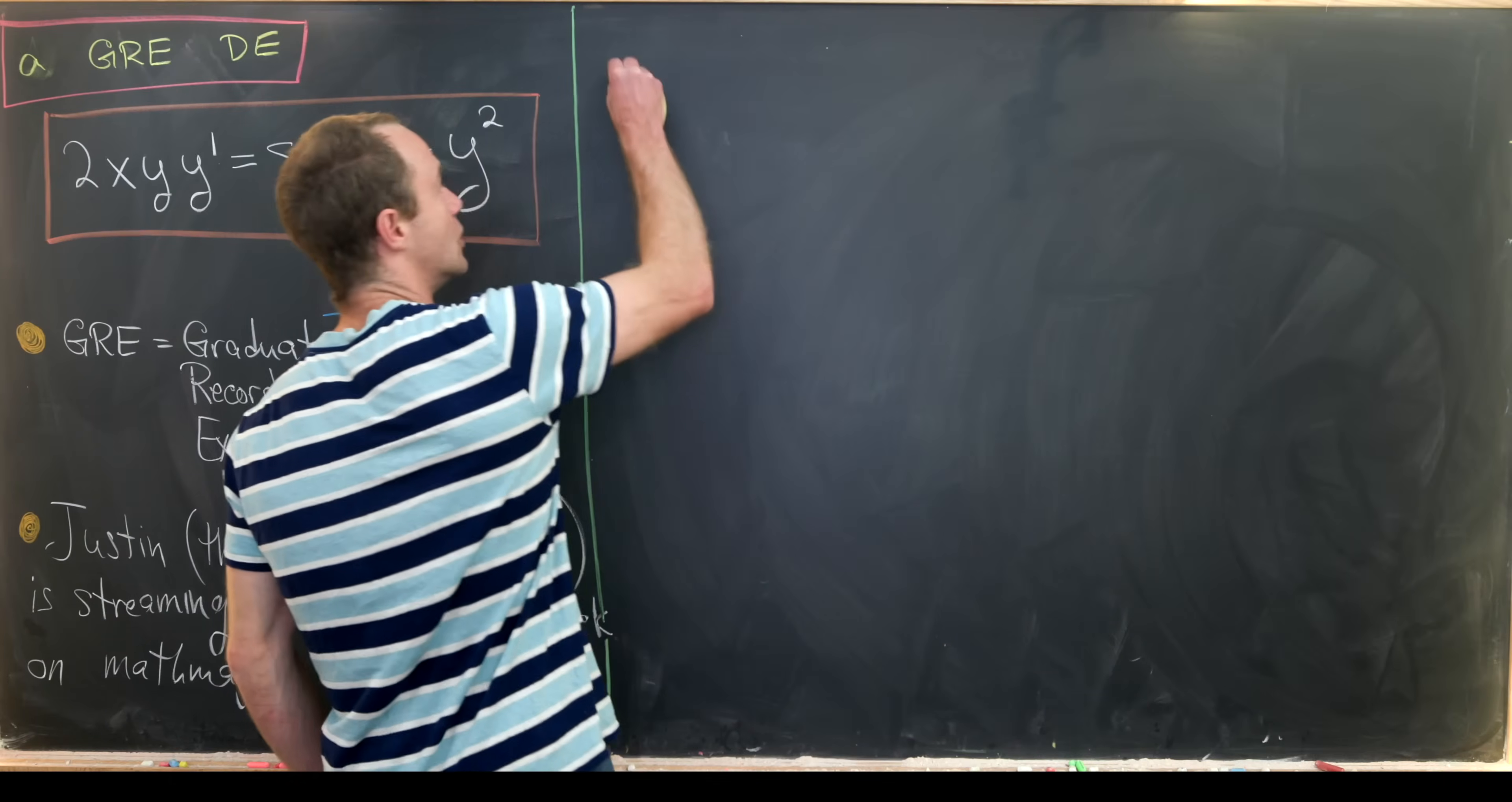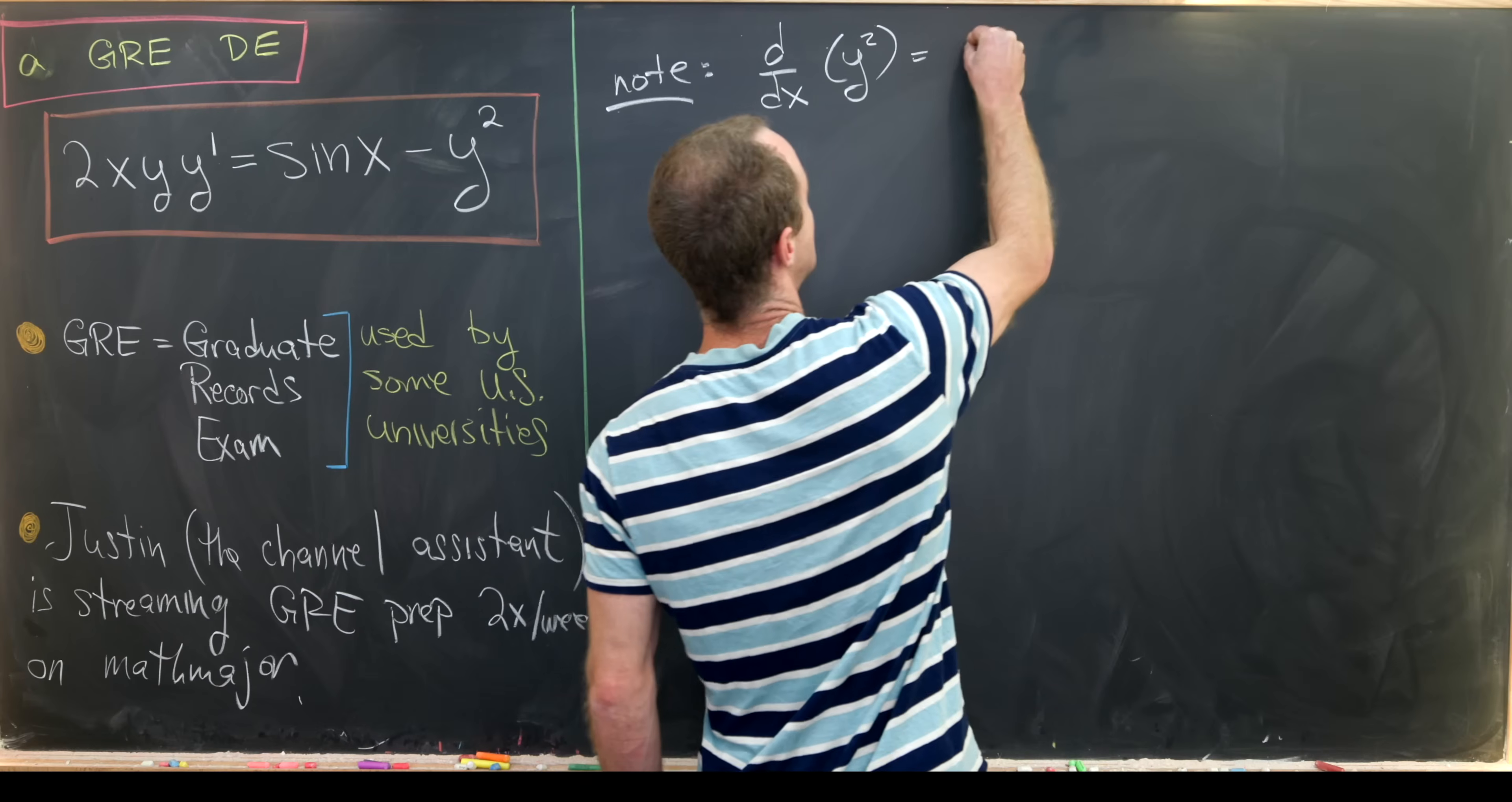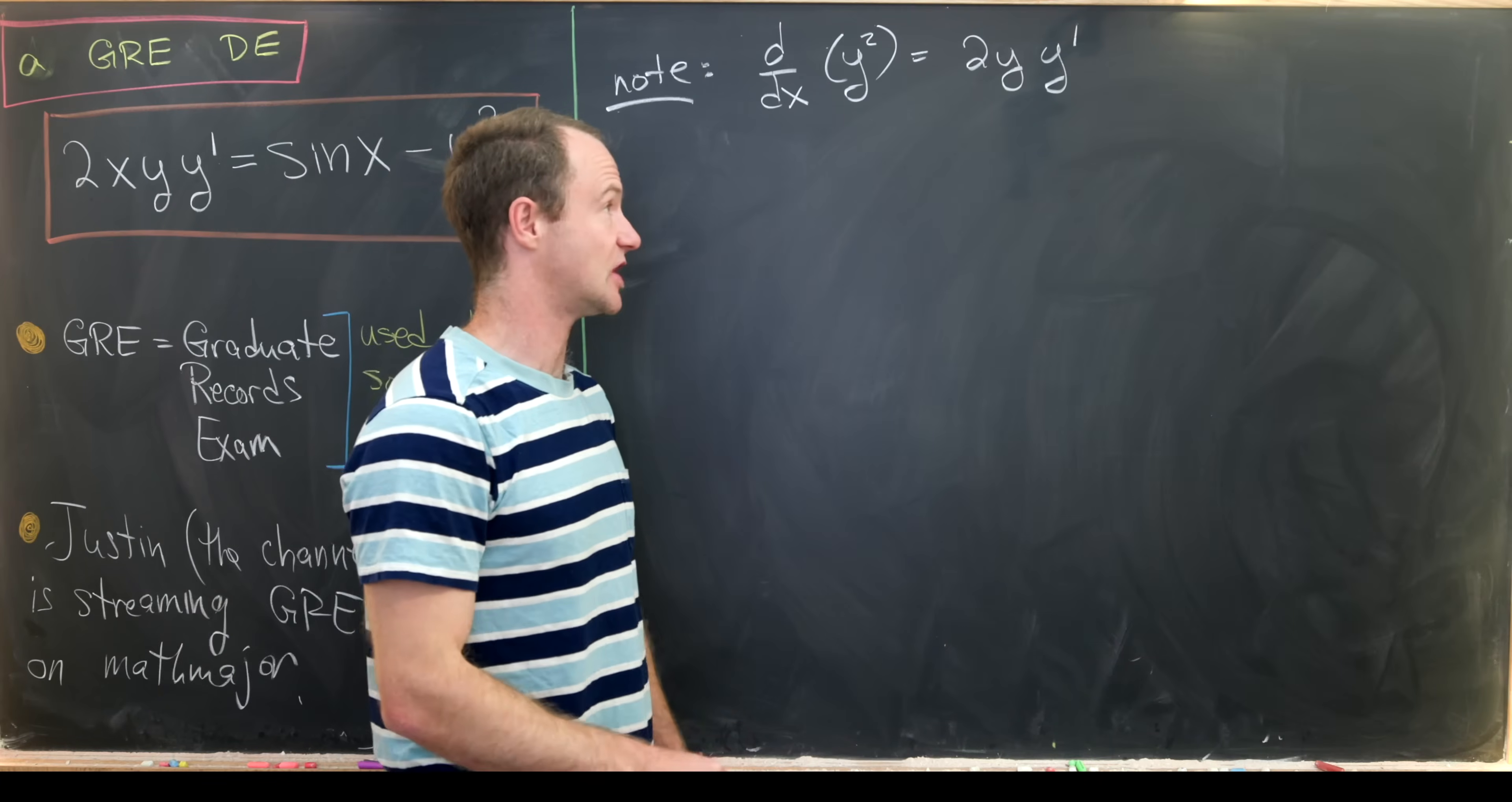So let's maybe note that first and see what that does for us. The derivative with respect to x of y squared equals 2 times y times the derivative of y with respect to x, like I said by the chain rule.